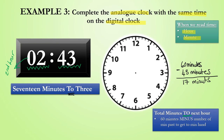Now let's show this on the analog clock. Since it is 17 minutes to 3, we know that we are on our way to the third hour but we are not there yet. The hour hand will go between the 2 and the 3. Since we already know that 43 minutes have passed the hour, the minute hand will point to the 43rd marking on the analog clock.